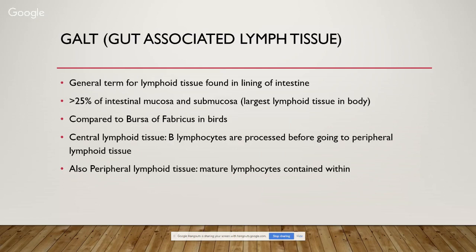The gut-associated lymph tissue or GALT is the general term for lymphoid tissue in the lining of the intestine. More than 25 percent of intestinal mucosa and submucosa is incorporated in this tissue, making it the largest lymphoid tissue in the body. It is compared to the bursa of Fabricius in birds and is a central lymphoid tissue where B lymphocytes are processed before going to peripheral lymphoid tissue. It is also considered peripheral lymphoid tissue because mature lymphocytes are contained within it.